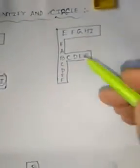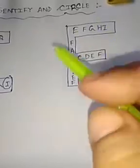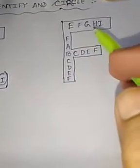Now, next one. F. Big one is F. In between there are also some F's. So find it out and circle.